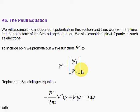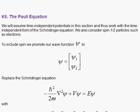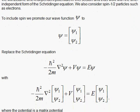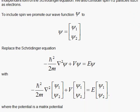We're going to consider the case where the potential energy is only a function of x, y, and z, so the potential does not have time dependence. Then I can use the time-independent Schrödinger Equation. The question we ask is: does it make sense to replace the regular wave function with a spinor wave function?